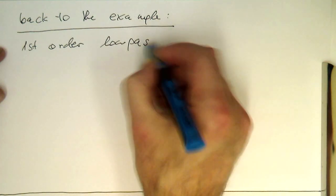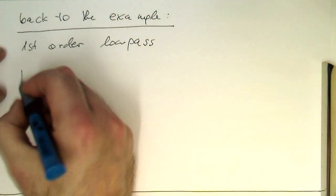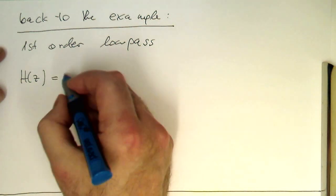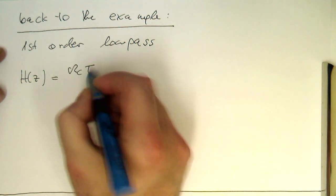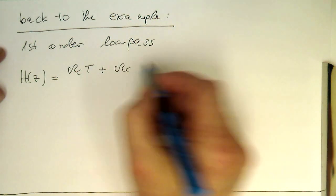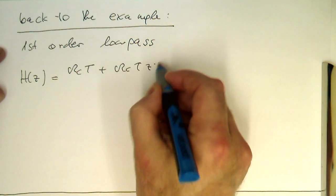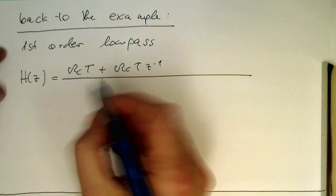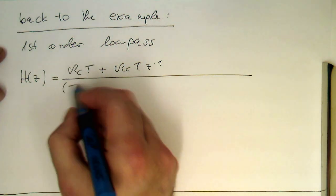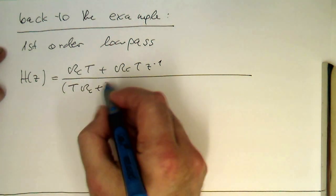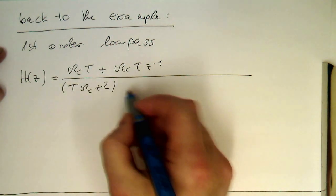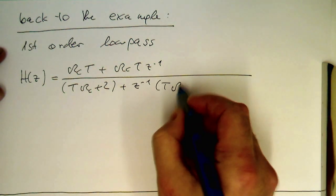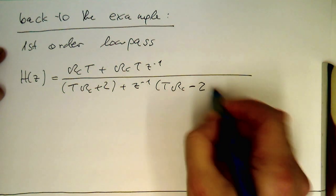Just write this down here. So H(z) equals omega_c T plus omega_c T z^(-1), divided by T omega_c plus 2, plus z^(-1) times T omega_c minus 2.